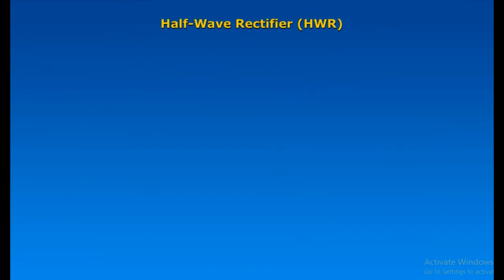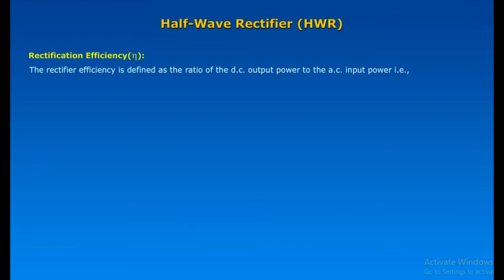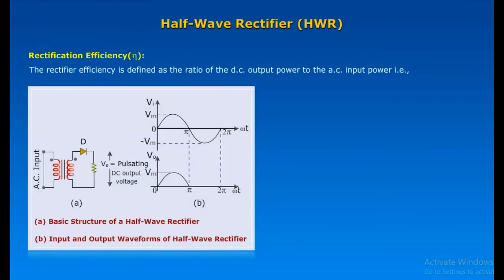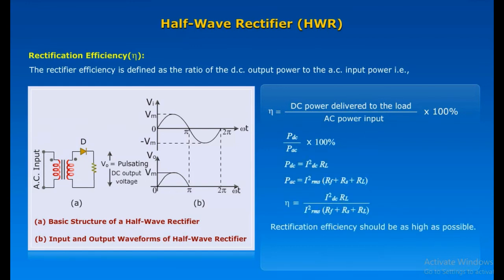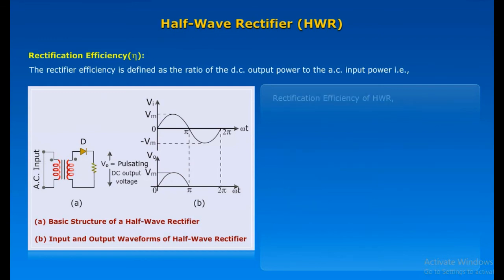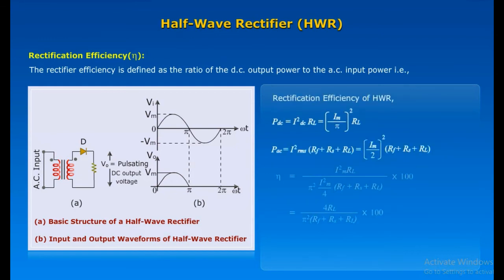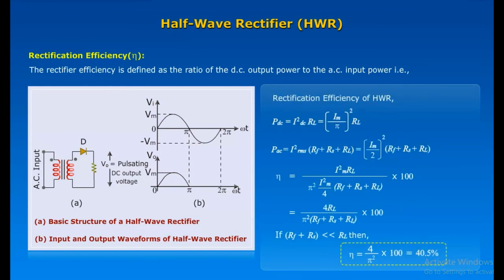Half-Wave Rectifier Rectification Efficiency: The rectifier efficiency is defined as the ratio of the DC output power to the AC input power. Rectifier efficiency is given as shown and should be as high as possible. The rectification efficiency of the Half-Wave Rectifier (HWR) is derived accordingly.